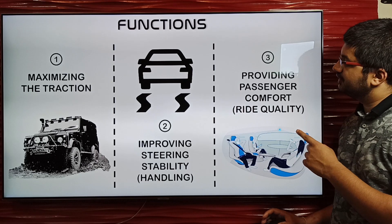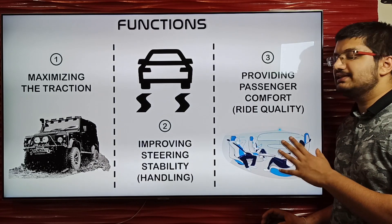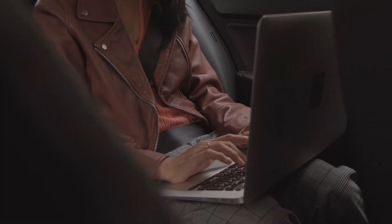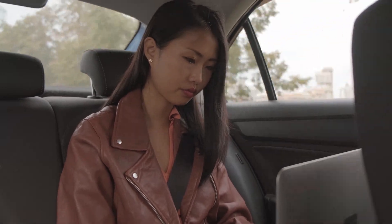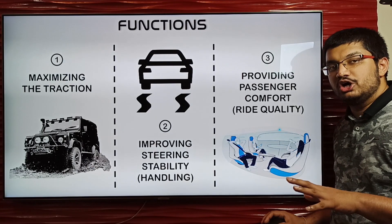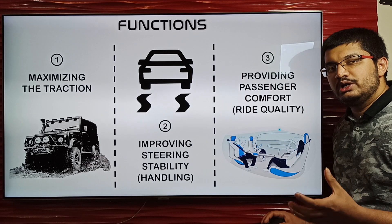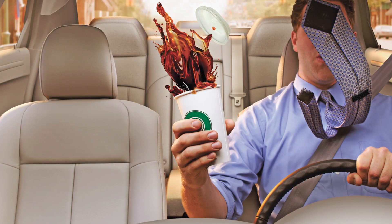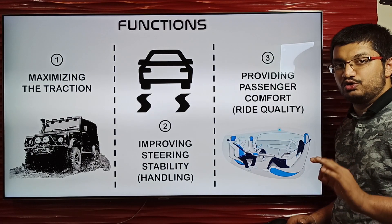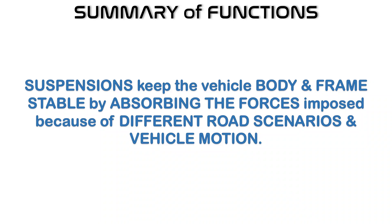The third important function is providing passenger comfort — that is, increasing ride quality. The suspension system dampens the shocks, meaning the ground reactions coming from the road due to bumps and pits, and hence increases passenger comfort. Without suspensions, you would be thrown all over the vehicle even on the slightest rough roads. In summary, the suspensions keep the vehicle body and frame stable by absorbing the forces imposed because of different road scenarios and vehicle motion.